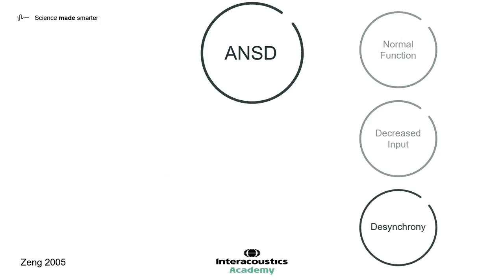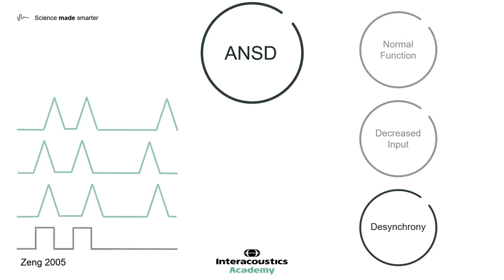Finally, neural desynchrony. Again, the same signal is presented, but although all three nerve fibres are firing, they are all firing at ever so slightly different times in response to the signal. They also all have different resting firing rates, but those are quite close together. The average signal now has a response to the signal, but it is smeared, as is the resting firing rate. It is very difficult to distinguish the response due to the signal against the background noise.